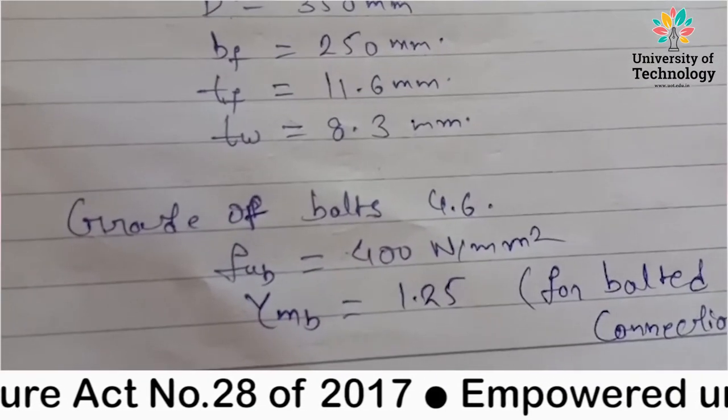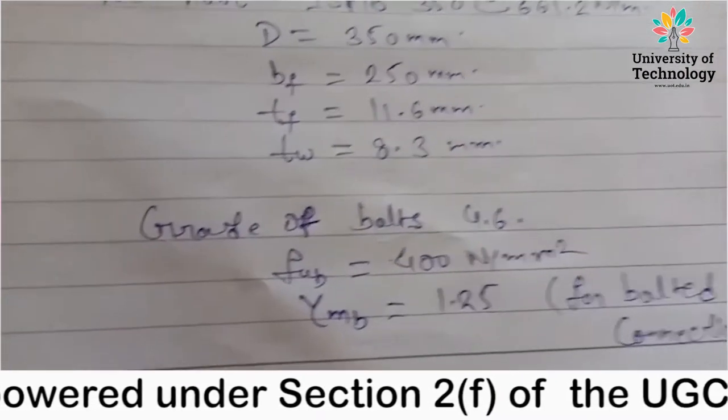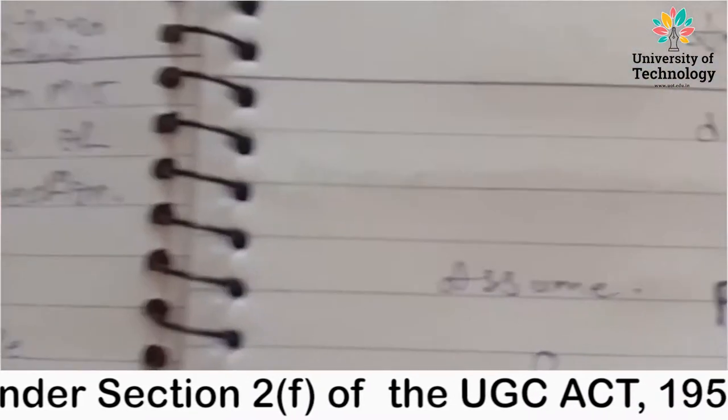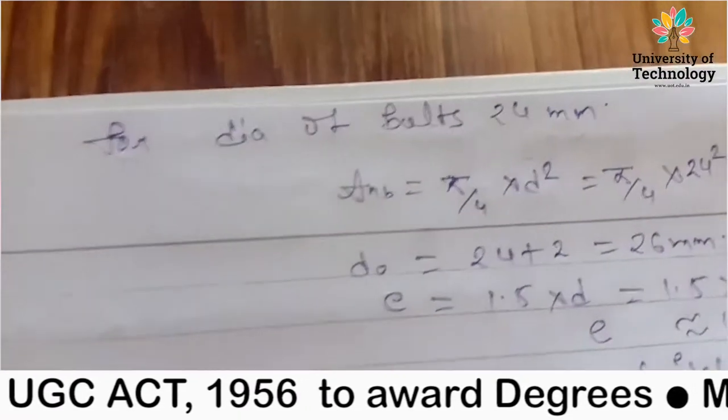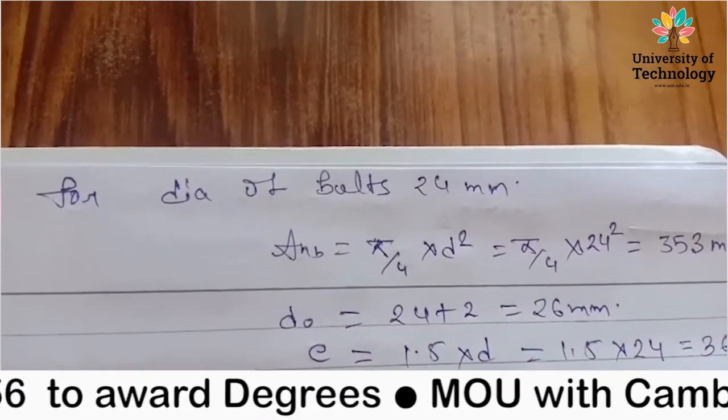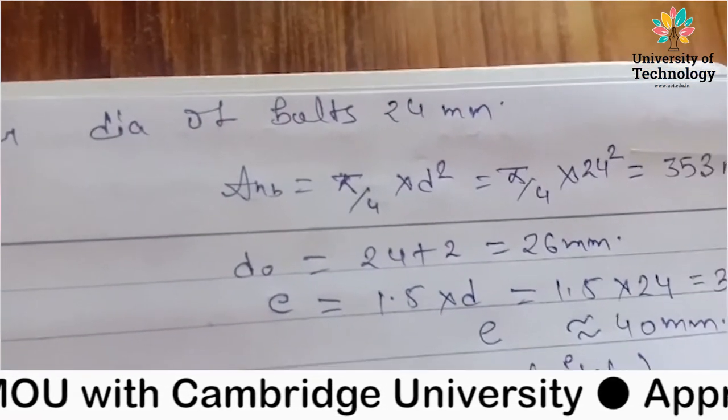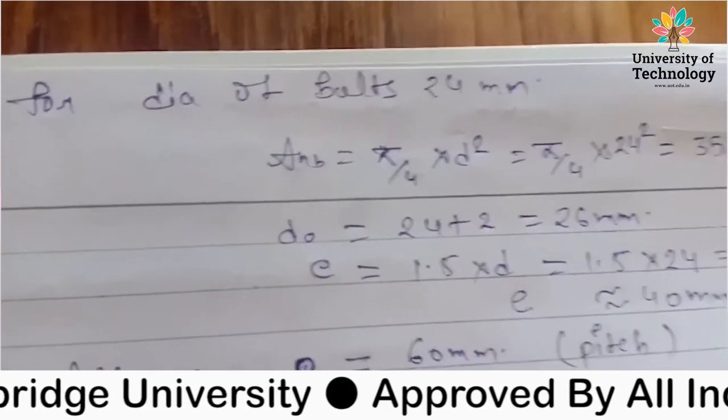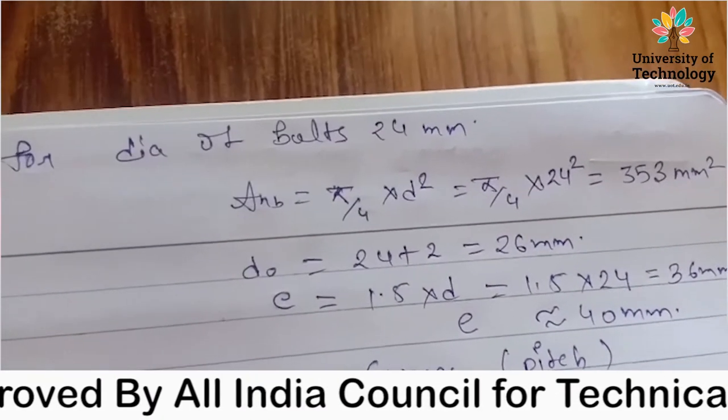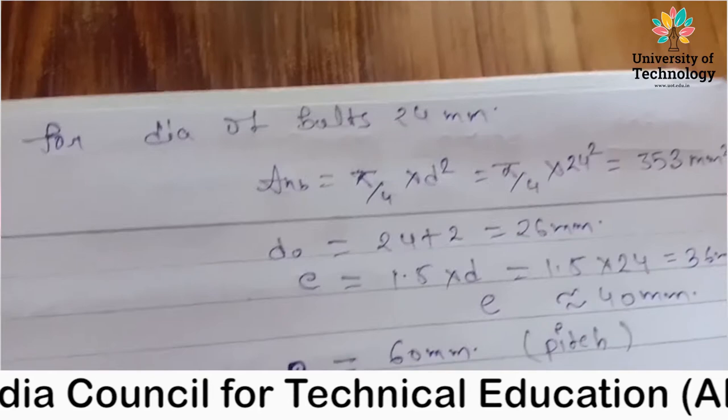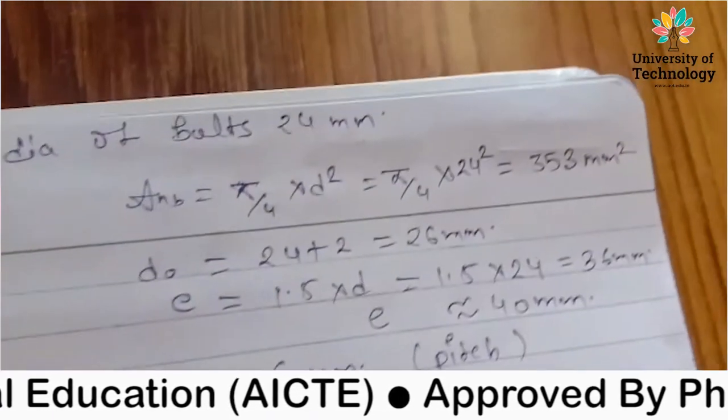Next, grade of bolt is 4.6, FUB is 400. Factor of safety for bolts is 1.25. We will take shop welded. Now for diameter of bolts 24, first we will remove the value for the bolted connection. D0 value is 5 by 4 into D2, D2 value is 24, so D0 value D plus 2 is 26.